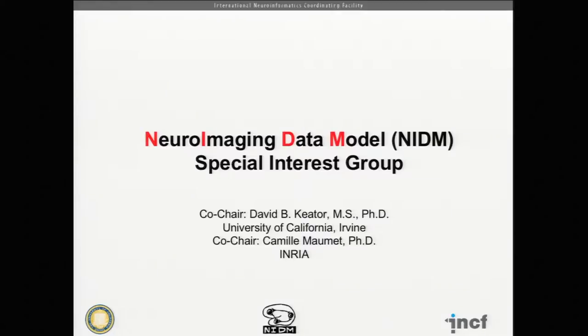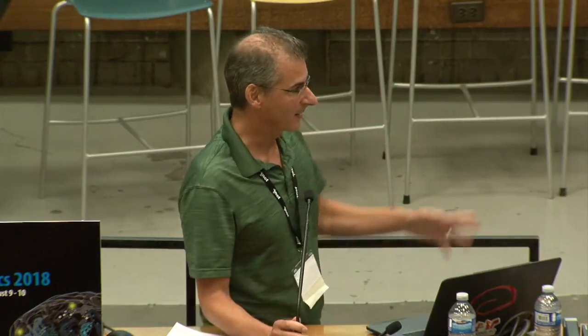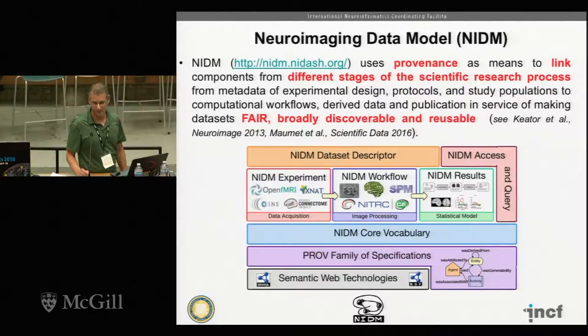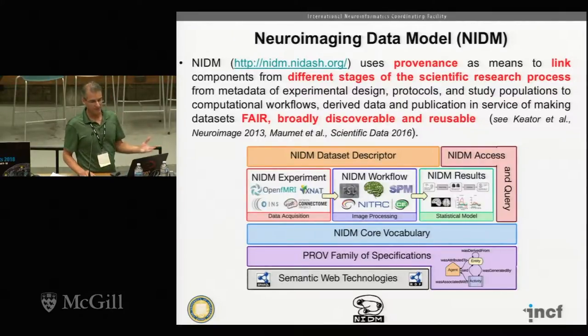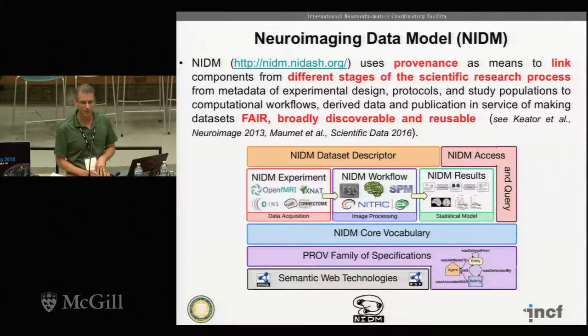I'm the chair, and my co-chair Camille and I are chairs of the Neuroimaging Data Model Special Interest Group. For those of you who aren't familiar with NIDM, we use provenance just like we just heard about NeuroShapes. We build a series of specifications on top of semantic web technologies and the PROV family of specifications.